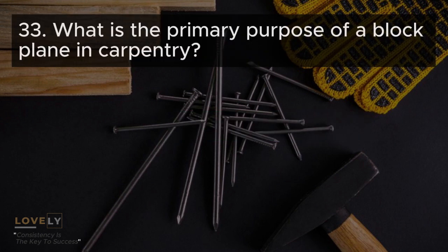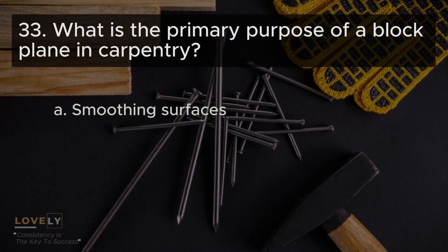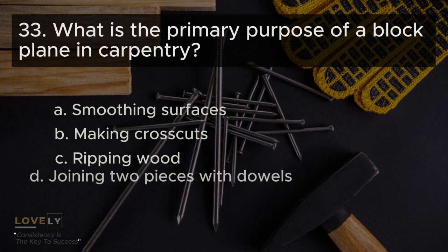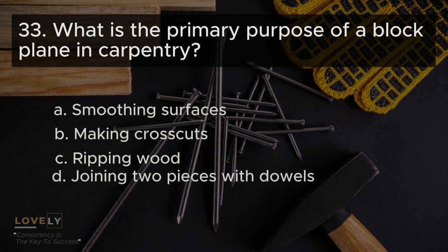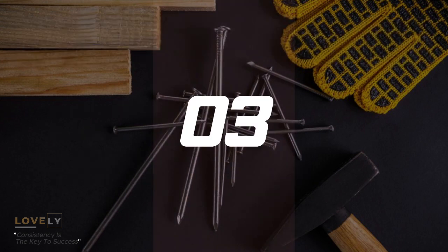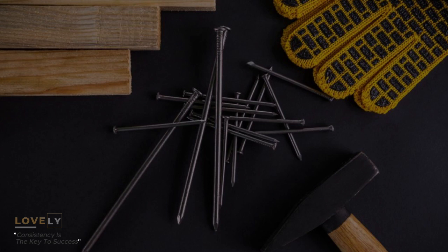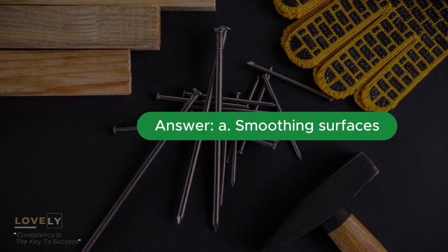Question 33: What is the primary purpose of a block plane in carpentry? A. Smoothing surfaces B. Making crosscuts C. Ripping wood D. Joining two pieces with dowels. Answer A. Smoothing surfaces.